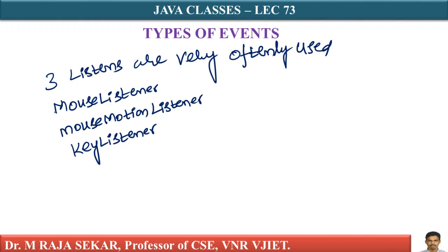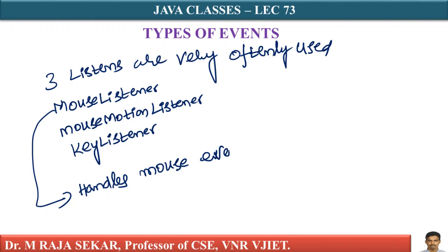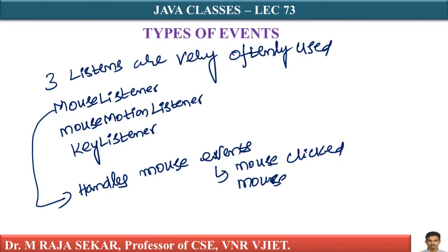MouseListener handles mouse events. It handles mouse related events. When the mouse is clicked - mouse click is an event. If I click with the mouse that is an event: mouse click, or mouse press. These are events related to the mouse.